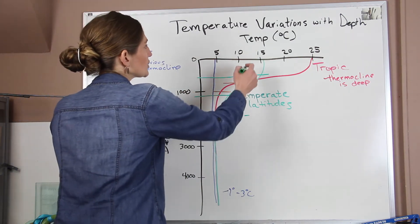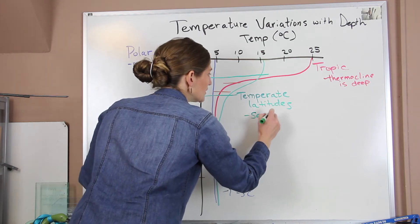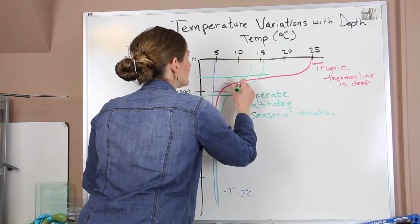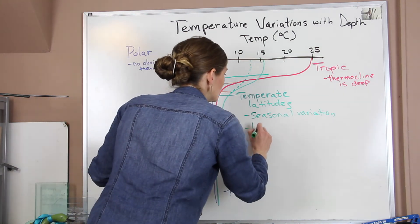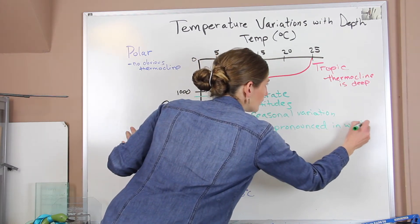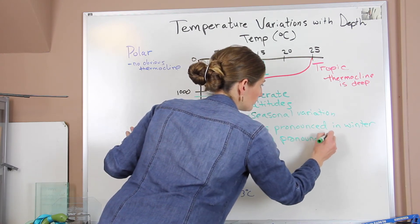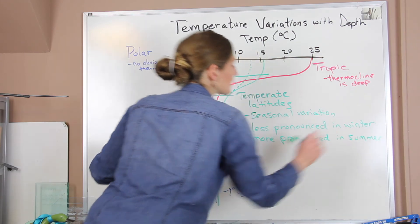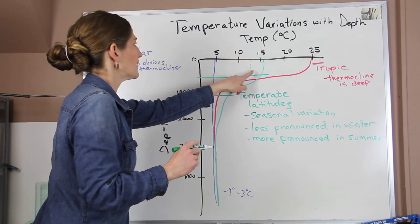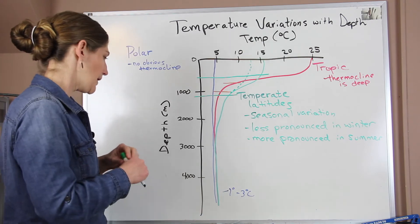We're going to see some seasonal variation in the sea surface temperatures because we're at these temperate latitudes. In the winter months, the thermocline will be less pronounced, and it's going to be more pronounced in the summer months. That's because in those summer months, we get more incoming solar radiation, which leads to warmer sea surface temperatures. The thermocline in this area is thicker — it's a wider zone within the ocean.